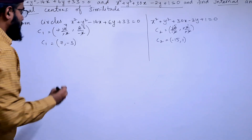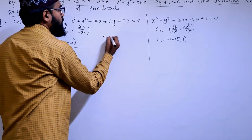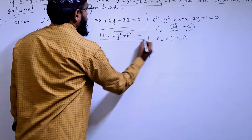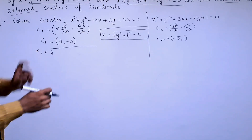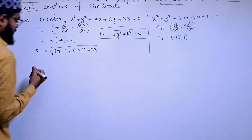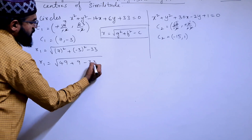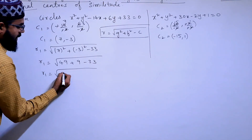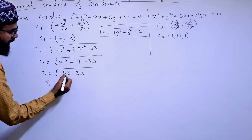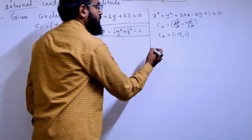Now let us find the radius. The formula is r = √(g² + f² − c). For the first circle, g = 7, f = −3, and c = 33. So r1 = √(49 + 9 − 33) = √25 = 5. Therefore r1 = 5.